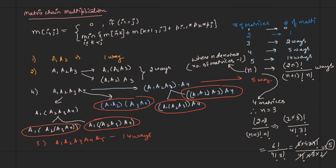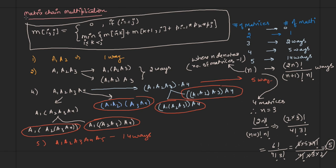Here we identified there is an optimal substructure. Optimal substructure means that when we apply this formula to find the minimum number of multiplications required, many subproblems repeat themselves. We want to remember those subproblem results in an array so we don't have to evaluate them again and again. Let us identify those optimal substructures and try to store them in an array.